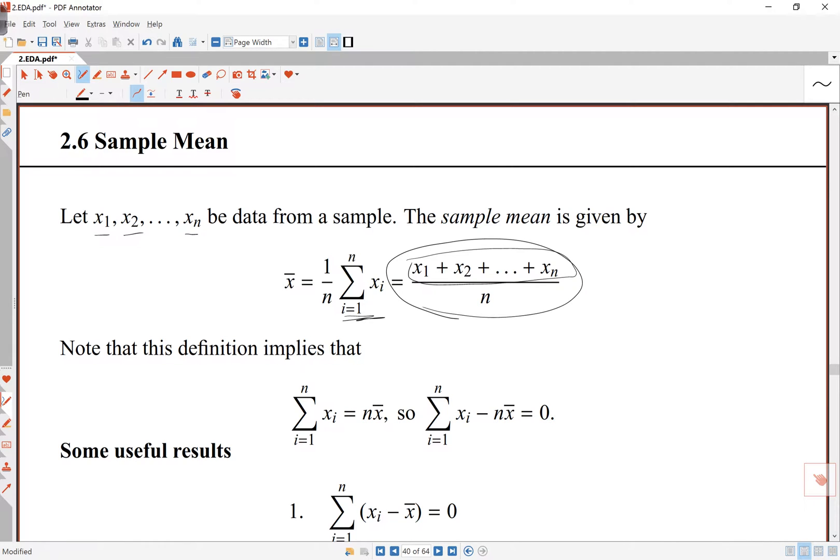If I take the n across to the other side, nx bar, then on the right-hand side I've got the sum of the x, so on the left-hand side I've got the sum of the x sides, and the sum of the numbers, the total of the numbers, is nx bar. So this is just the total of the numbers.